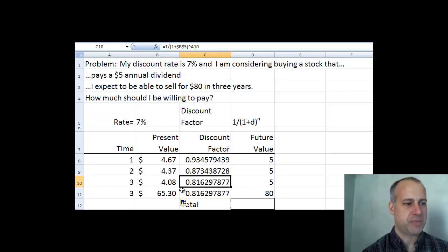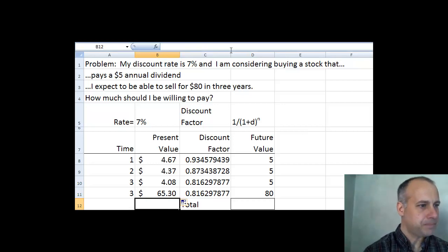Note that the discount factor, since both of these payments, the third dividend payment and the proceeds from the sale are received at the same time, those two things have the same discount factor. So add these up, and this says that the present value of this stream of payments is $78.43.